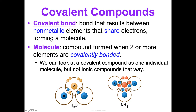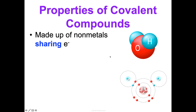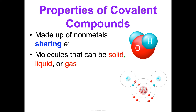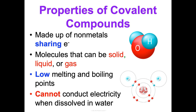Form dictates function — the structure of something determines how it behaves. Covalent compounds, which have covalent bonds in their structure, have specific observable properties. They are made of nonmetals sharing electrons. At room temperature they can be solid, liquid, or gas. They tend to have low melting and boiling points, meaning it doesn't take much energy to change their state. And they cannot conduct electricity when dissolved in water — for example, dissolving sugar in water will not allow electricity to conduct through it.